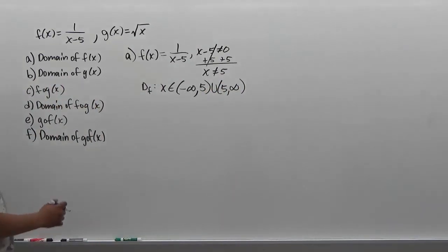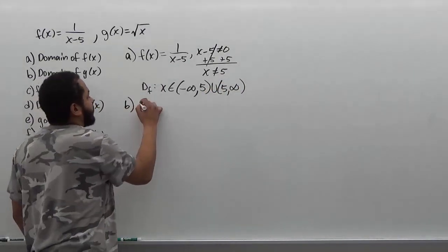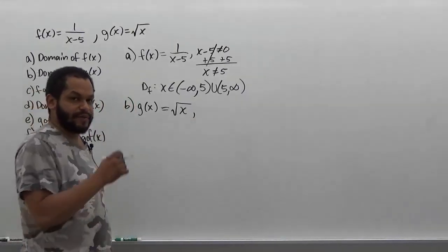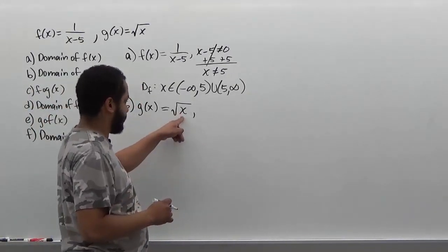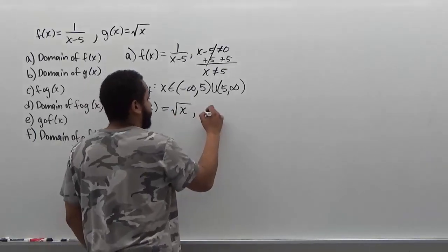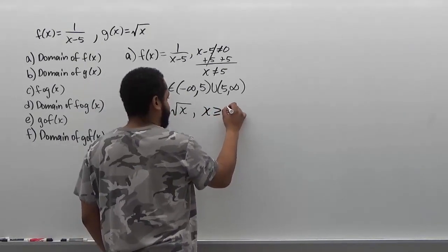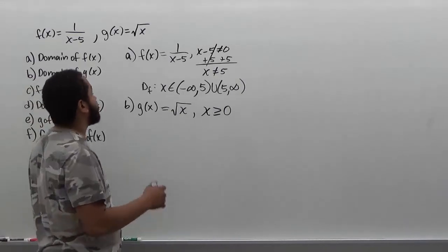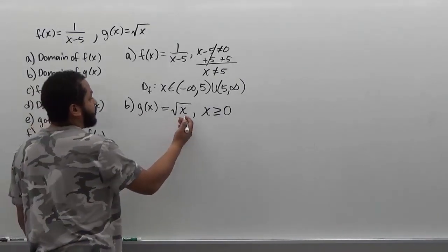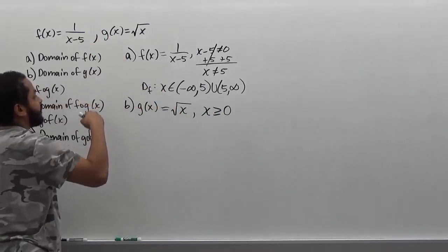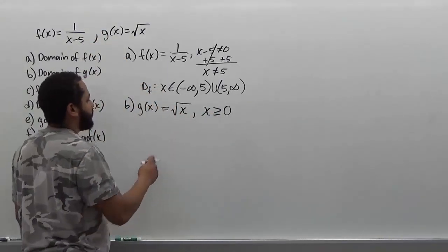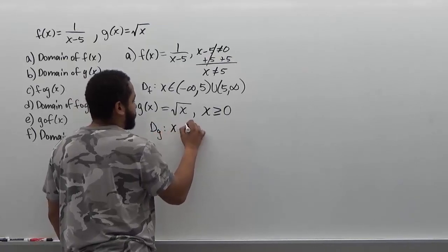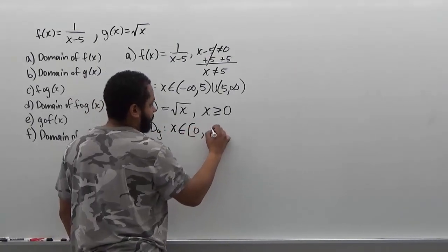Moving on, we're going to do the domain of the g function. The g function is equivalent to the square root of x, where in every case for square roots we have to remember the square root cannot be taken if the number is less than 0. So the x value must be greater or equal to 0. This pertains to all inner functions of square roots — you just set the inside greater or equal to 0, except when it's in the denominator, where it can only be strictly greater than 0. So the domain of the g function is x belongs to 0 inclusively, all the way to infinity.